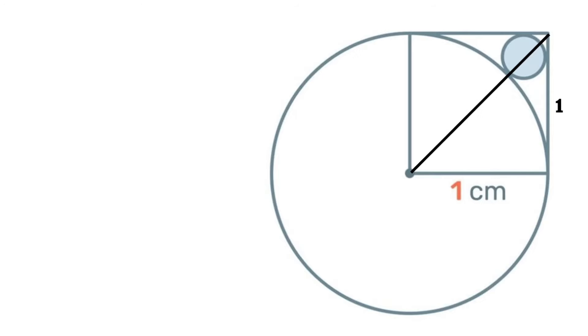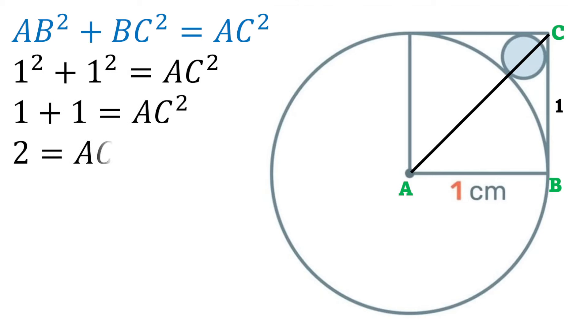Then let's join that diagonal and label these vertices A, B, C. And then we have by Pythagoras's theorem that the square of AB plus the square of BC is equal to the square of AC. Substituting our values we have one squared plus one squared is equal to AC squared.